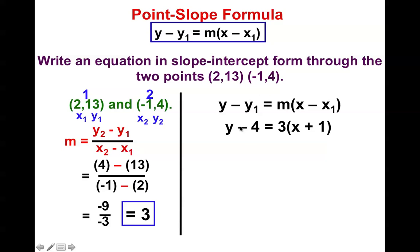And minus 4 would be plus negative 4. I distribute. 3 times x is 3x. 3 times 1 is 3. Add 4. And we get our answer.